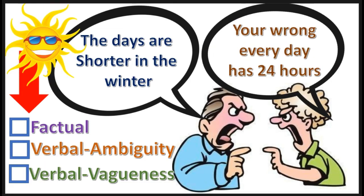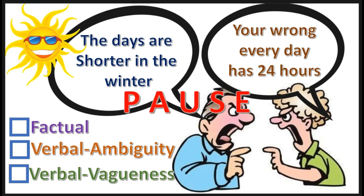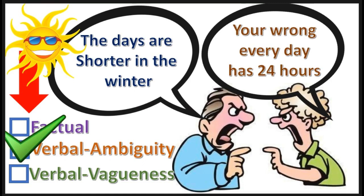Next practice problem — select the correct answer. Press pause, the answer is in three, two, one. That's right — it's a verbal dispute. The word 'day' can mean total hours or total daylight hours.